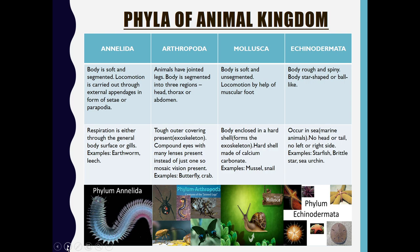The next phylum is Annelida. Organisms coming under this phylum have a soft and segmented body. Their locomotion is carried out through external appendages in the form of setae or parapodia. Their respiration is either through the general body surface or through gills. Examples include the earthworm and the leech.